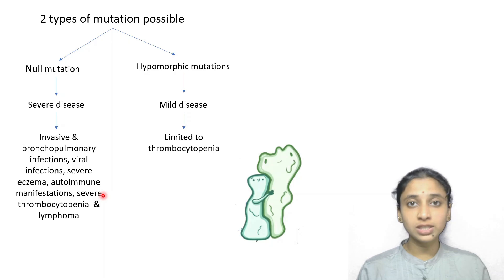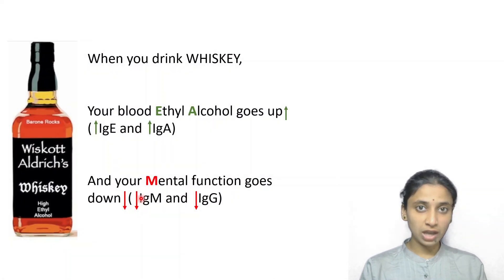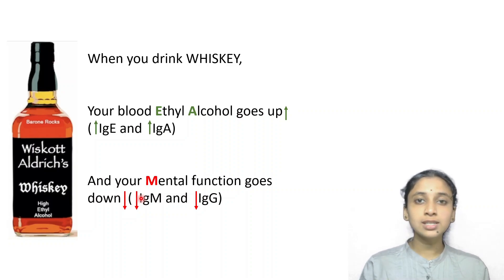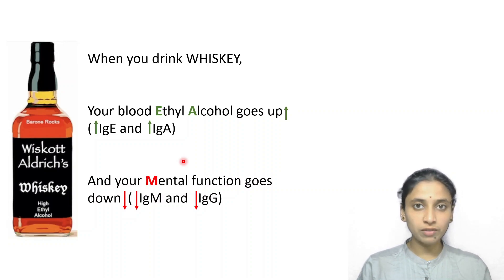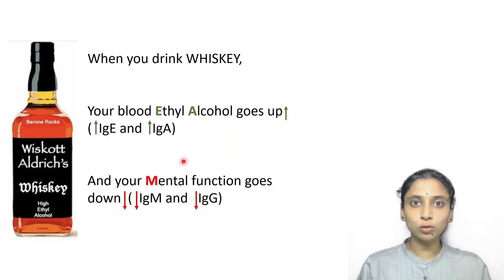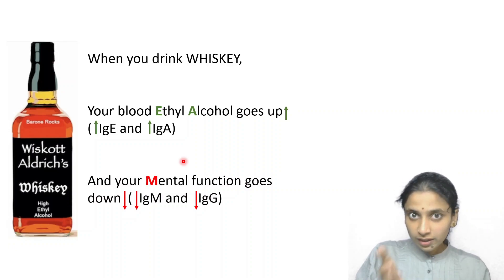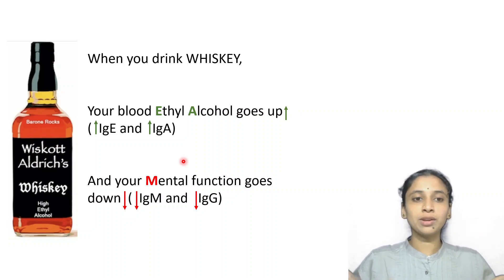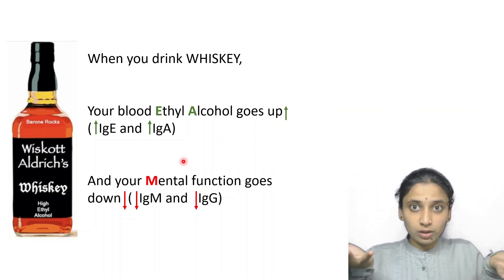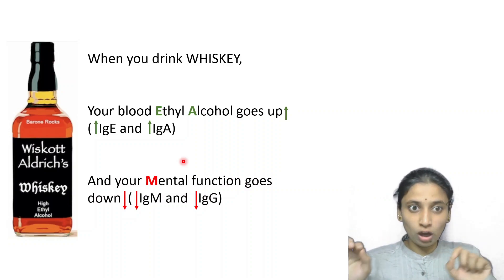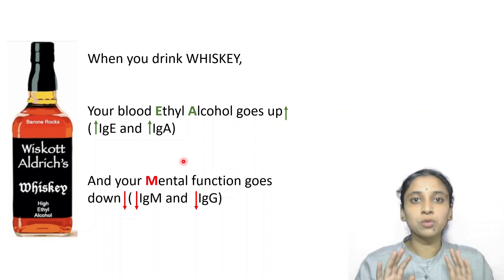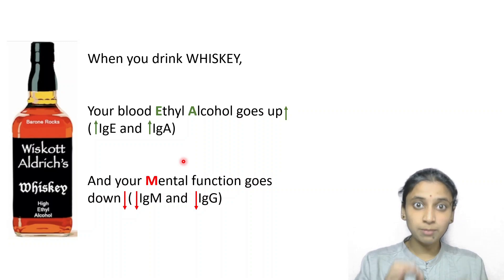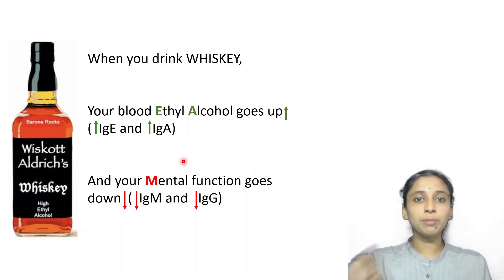One important point to remember: there will be a rise in serum IgE and IgA levels, whereas IgM and IgG levels will fall. Although the evidence is inconclusive, questions are asked based on this. A helpful mnemonic: imagine a brand of whiskey called 'Wiskott-Aldrich whiskey.' If you drink it, blood ethyl alcohol level goes up and mental function comes down. Similarly, IgE and IgA go up, while IgM and IgG come down. This mnemonic will help you remember that serum IgE and IgA are raised, while IgM and IgG are reduced.